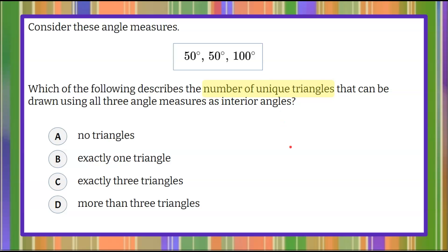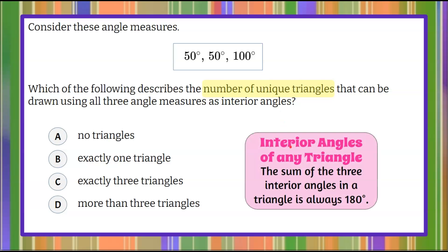To begin, let's review the theorem on interior angles of any triangle. This states that the sum of the three interior angles in a triangle is always 180 degrees. So in order for any three angles to form a triangle, their sum must be 180 degrees.